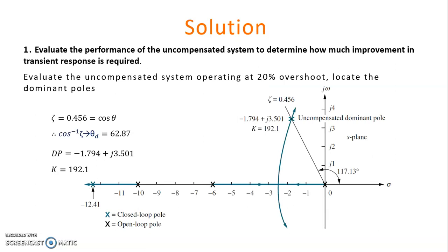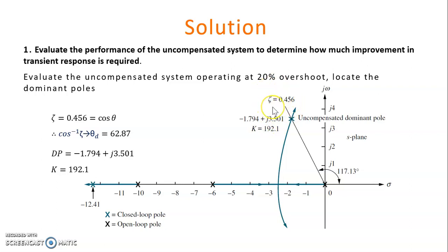The first step is to evaluate the performance of the uncompensated system to determine how much improvement in transient response is required. Given 20% overshoot, we can determine the damping ratio zeta equals 0.456. Using the gain value of 192.1, we determine the dominant pole as minus 1.794 plus j3.501. Using this damping ratio, we can also determine theta_d. This is the dominant pole of the uncompensated system.